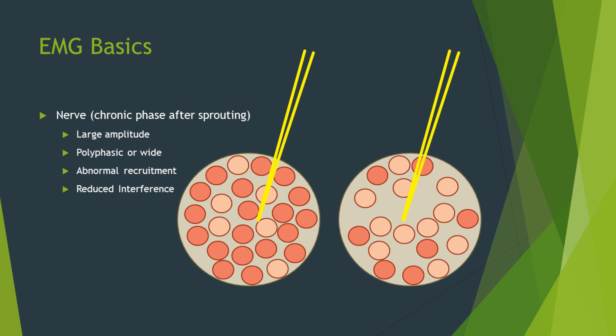The recruitment also becomes abnormal, and one's actually having these larger amplitude units coming in pretty quickly, as opposed to the normal orderly way that they are normally activated. And the interference pattern is also going to be reduced because you've actually lost muscle fibers too.